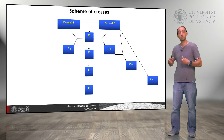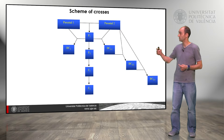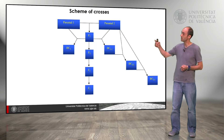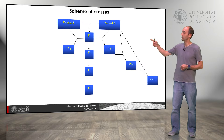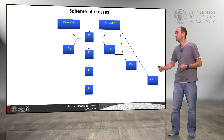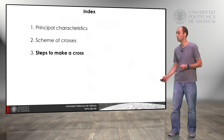We can follow this schema of crosses to produce F3, F4, if we allow those generations to reproduce between themselves, and we can cross the backcross with the parental again to continue this line and make those further crosses.